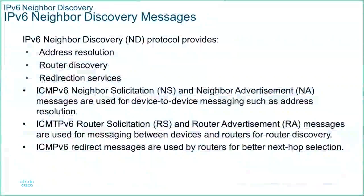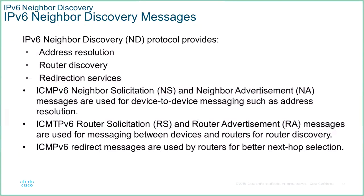Neighbor Discovery messages in IPv6 perform address resolution, router discovery, and redirection discovery. It uses neighbor solicitation and neighbor advertisement messages to send information between hosts, and router solicitation and router advertisement messages between routers. We need to understand how this discovery protocol works so that we can fault-find it.